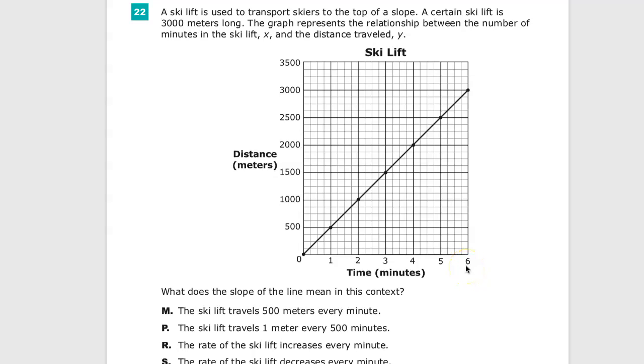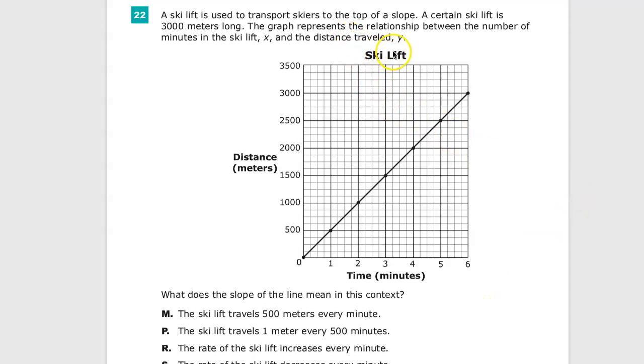A certain ski lift is 3,000 meters long. The graph represents the relationship between the number of minutes in the ski lift X and the distance traveled. So anytime I have a graph, I want to do a quick cursory look at a few things. The first thing I'm going to do is look at the title. Ski lift, okay. But I want to really focus on the axis labels and what they're doing.